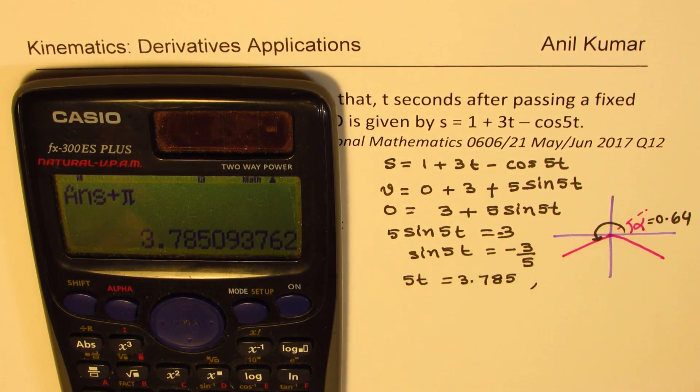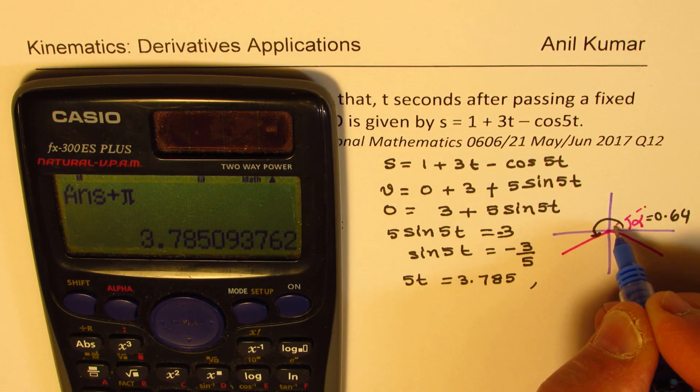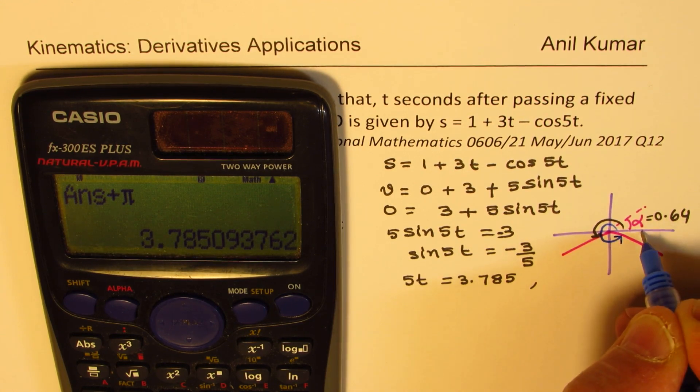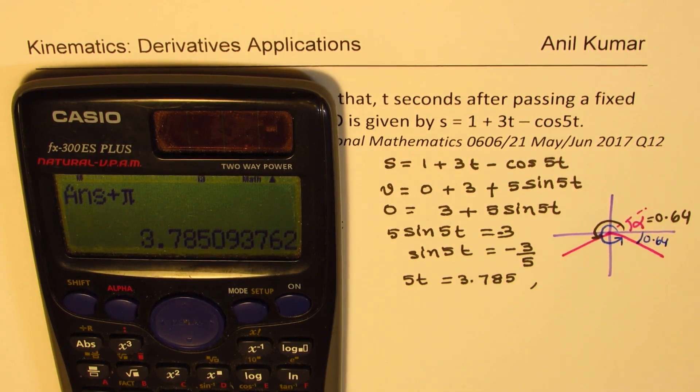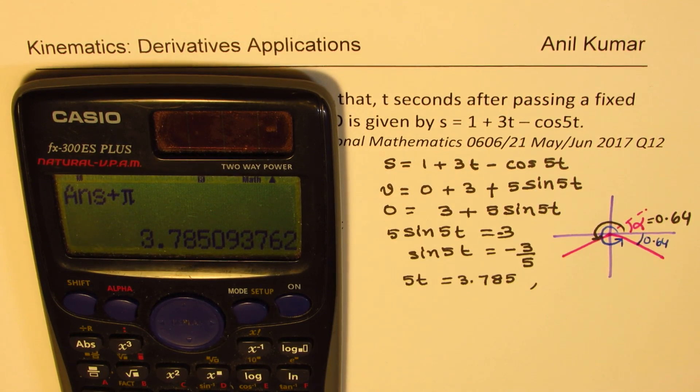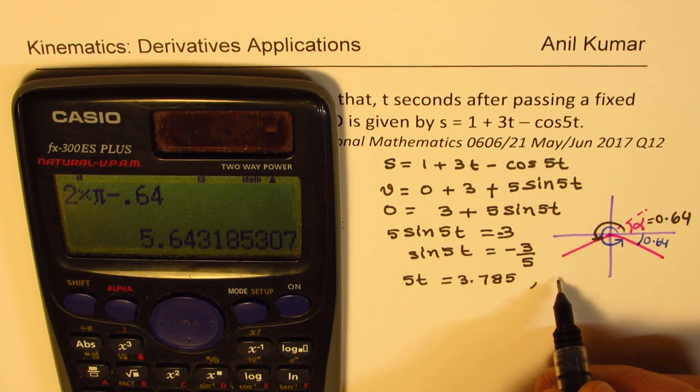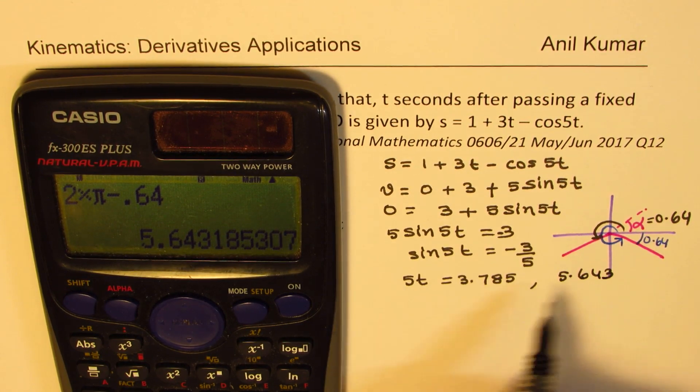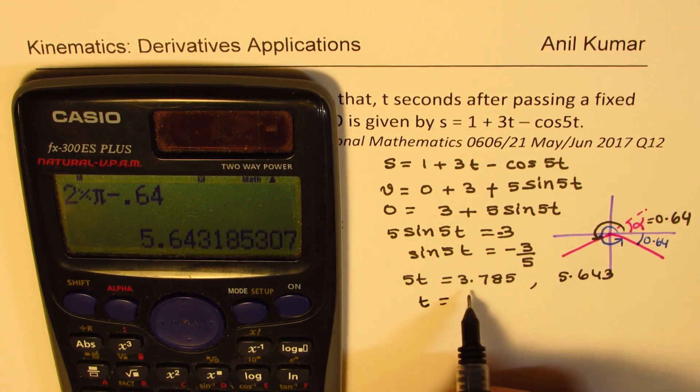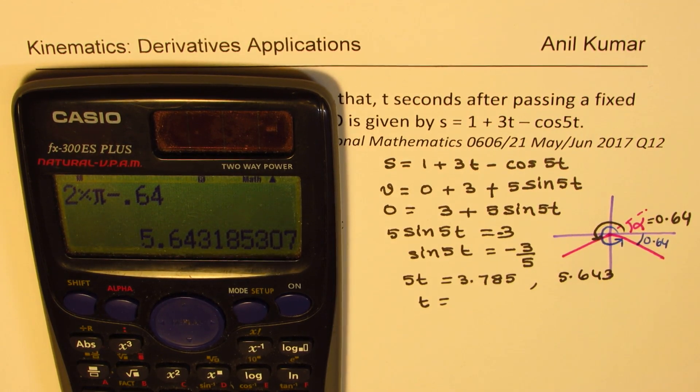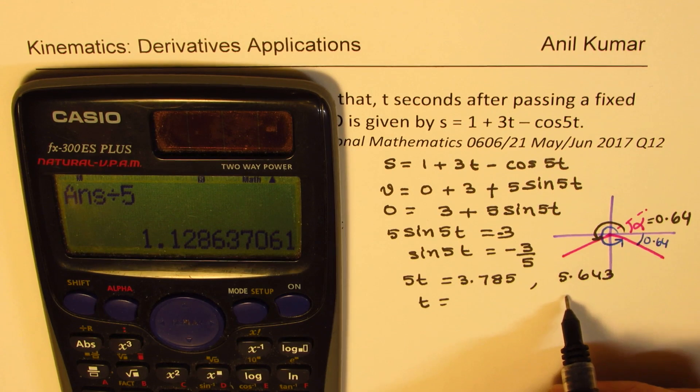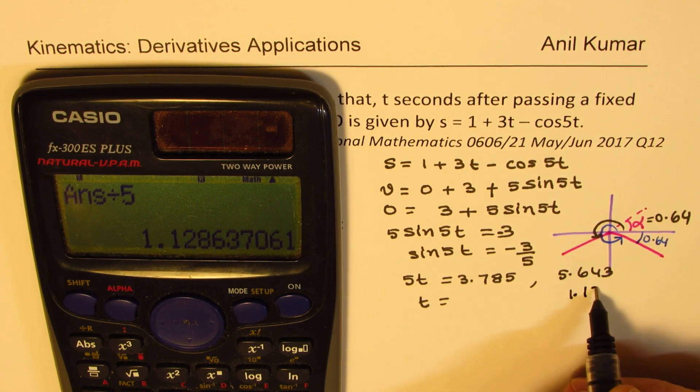The other value will be, as you can see from here, the other value should be 2π minus 0.64. So we'll do 2π, which is 2 times π minus 0.64. So that is given as 5.643. So this is 5t. So we'll find what t is, dividing these by 5. So let me divide the last one by 5 first, and we could write this to 1.13 approximately.